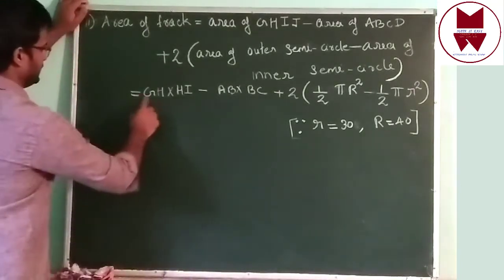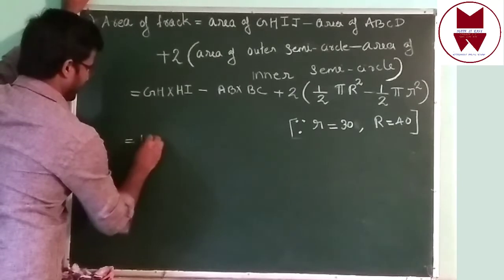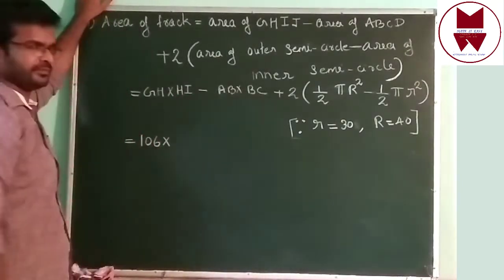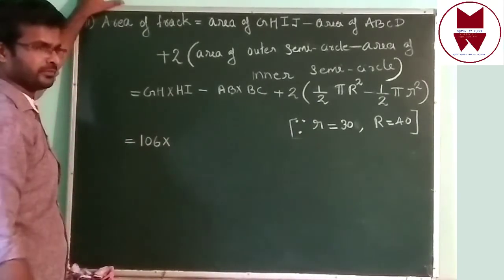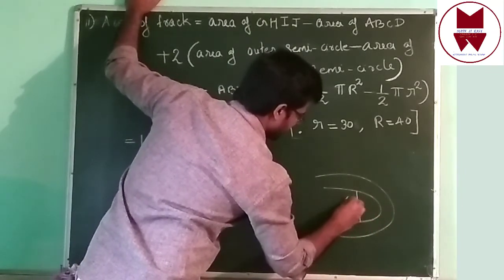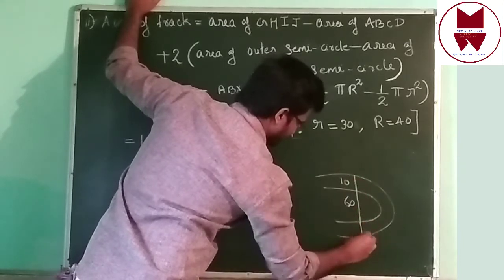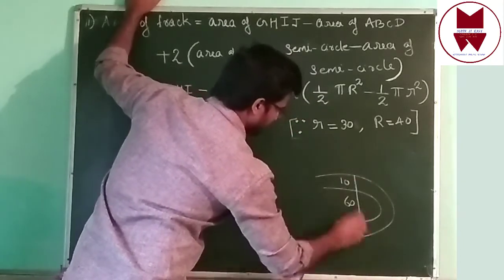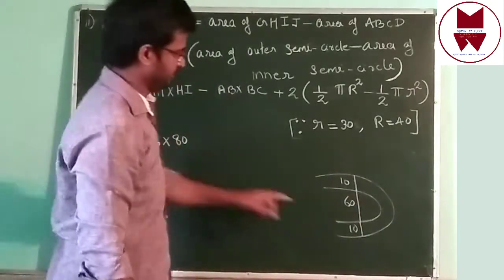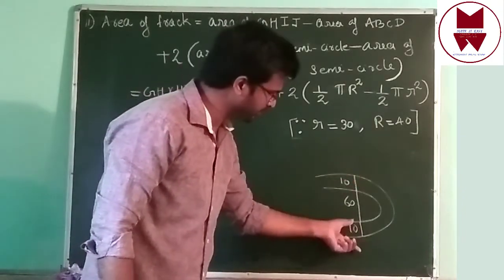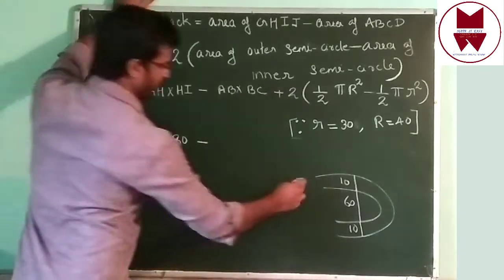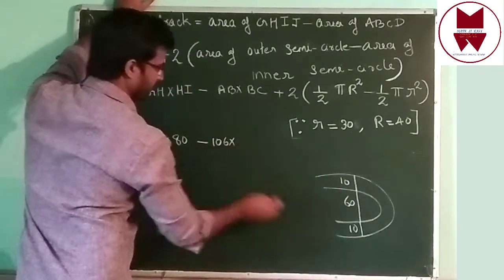Now give all values. GH is 106. HI: the middle part is 60, this side width is 10, downside also width is 10, so total HI is 10 plus 60 plus 10 equals 80. Minus AB into BC: AB is 106, BC is 60.